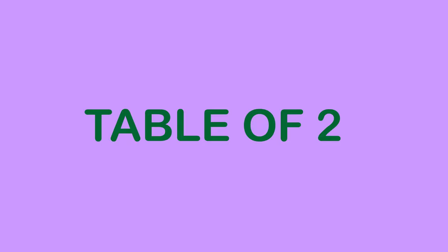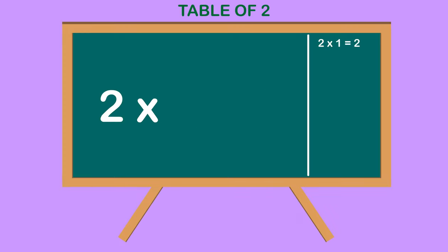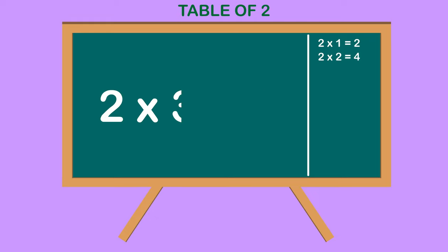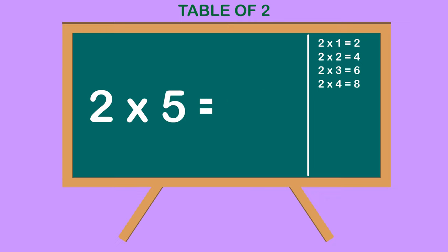Table of 2. 2 1s are 2, 2 2s are 4, 2 3s are 6, 2 4s are 8, 2 5s are 10.